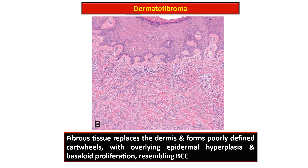This photomicrograph also shows the histopathological appearance of dermatofibroma. Fibrous tissue has replaced the dermis and forms poorly defined cartwheels. The overlying epithelium shows pseudoepitheliomatous hyperplasia, with basaloid proliferation along with elongation of rete ridges.